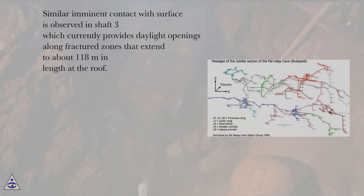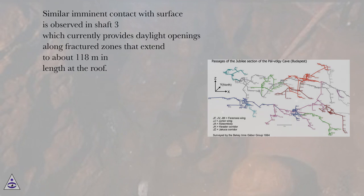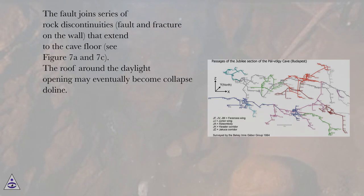Similar imminent contact with surface is observed in shaft 3, which currently provides daylight openings along fractured zones that extend to about 118 meters in length at the roof. The fault joins a series of rock discontinuities — fault and fracture on the wall — that extend to the cave floor; see figures 7a and 7c.